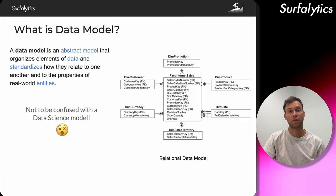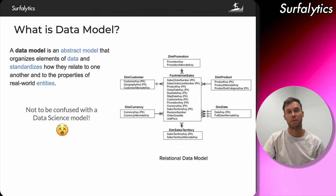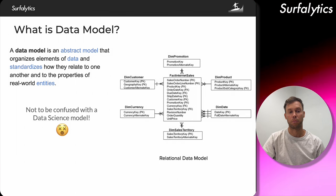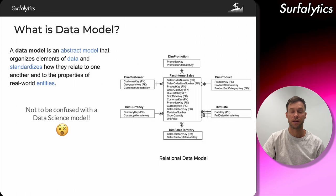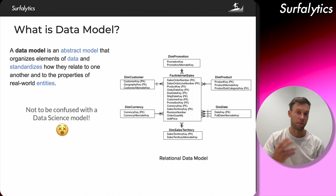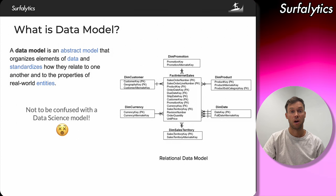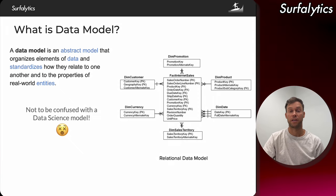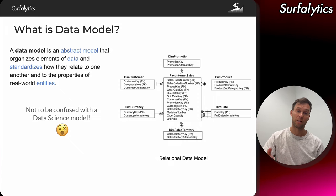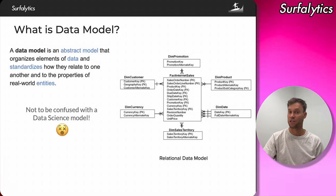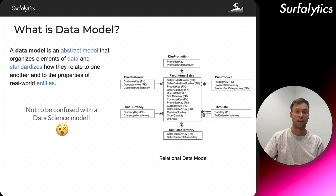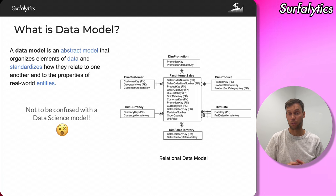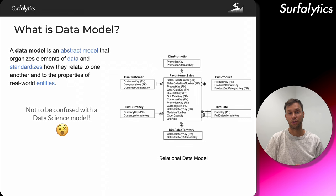The data model is an abstract model that organizes elements of data and strategizes how they relate to one another and to the properties of real-world entities. By real-world entities, I mean the actual business process. For example, if you work in an organization that has a sales process or a marketing team, they have entities like customer, product, mobile application, web store, online store, retail store — and they have different attributes. When we want to convert this business process into the databases world, we utilize data modeling.